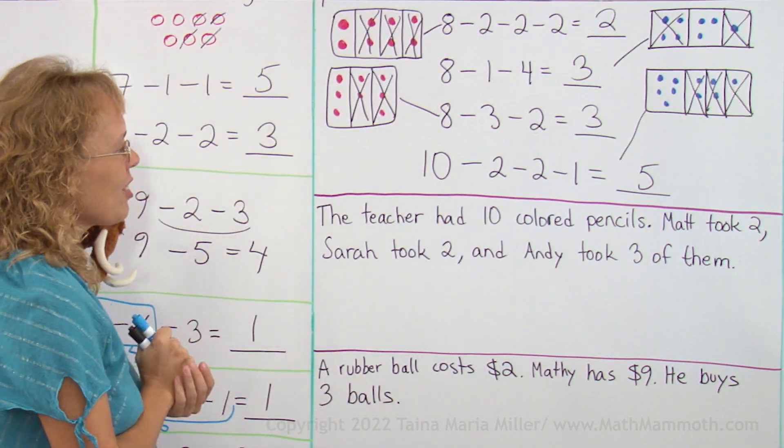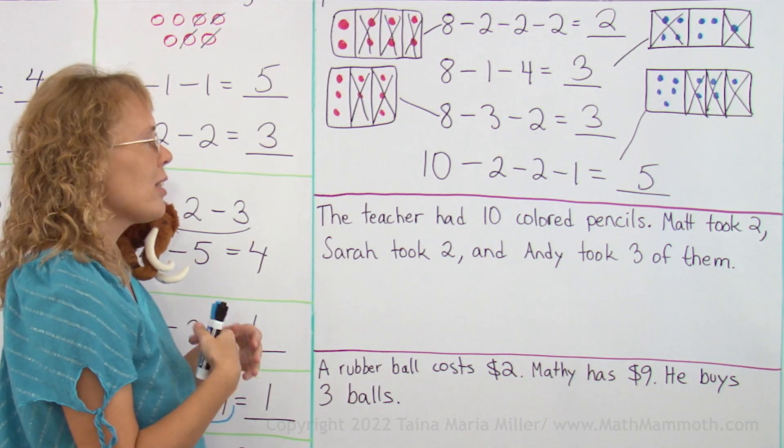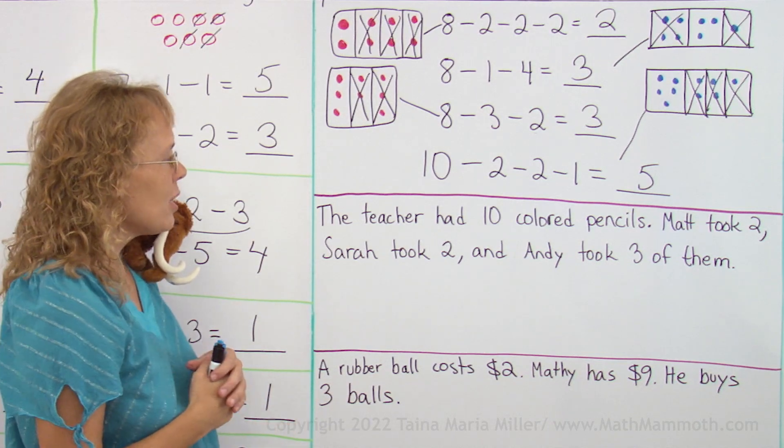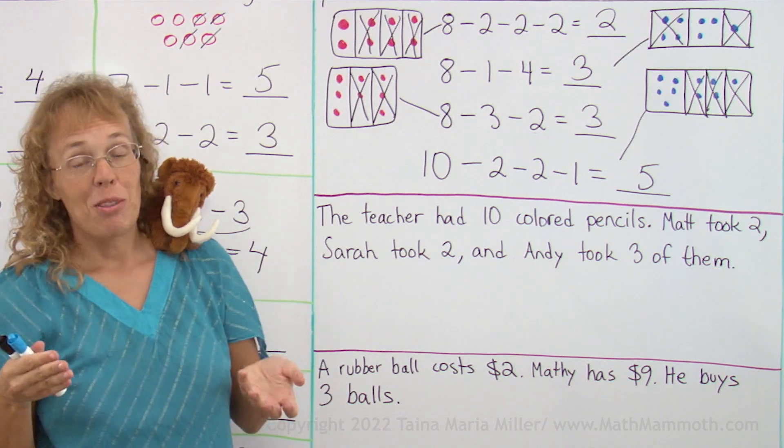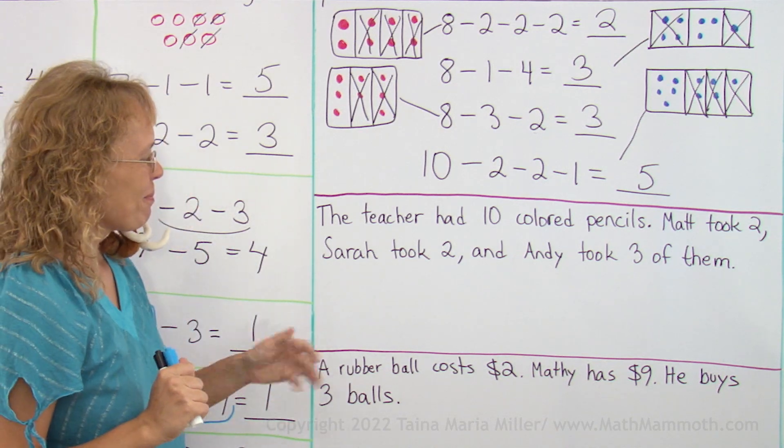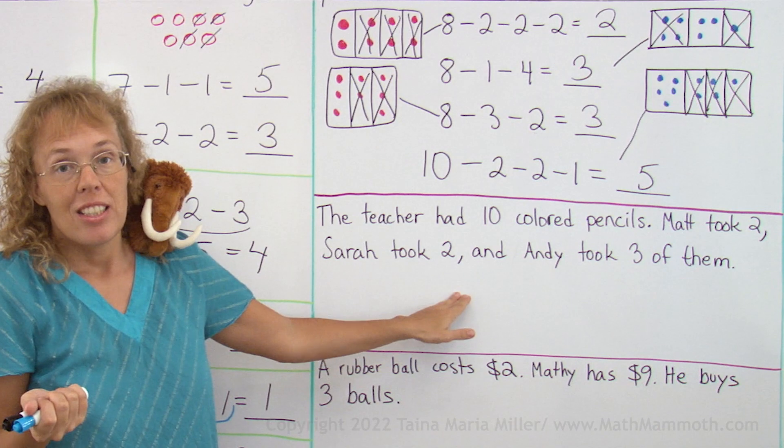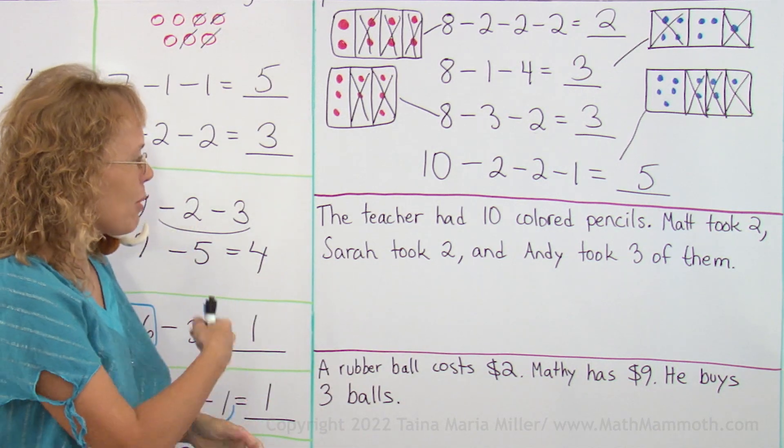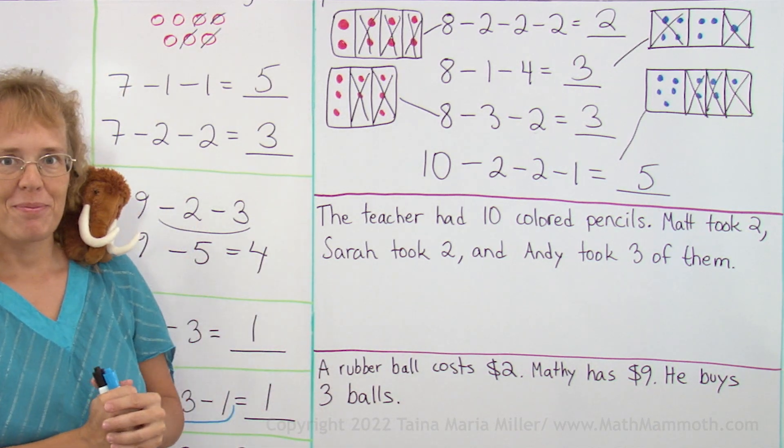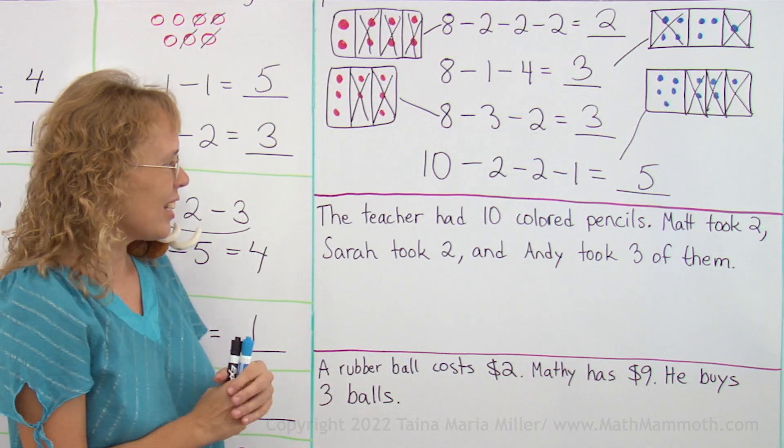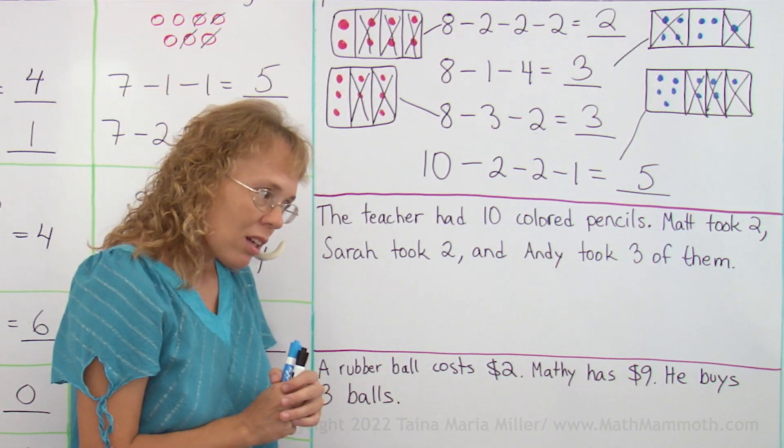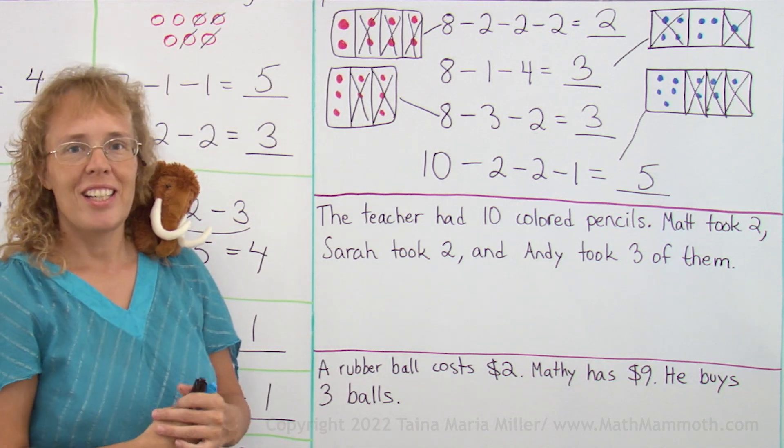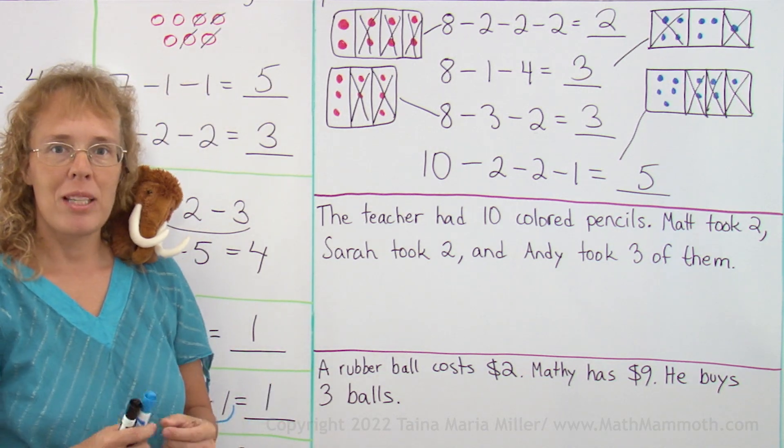The teacher had 10 colored pencils. Matt took 3, Sarah took 2, and Andy took 5 of them. What can we ask? I mean, it doesn't have any question, right? What kind of question can we ask about this situation? Any ideas? Matthew? Matthew's idea is, what colors were the pencils that Andy took?